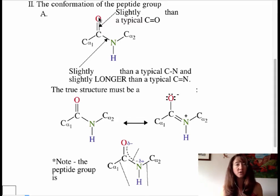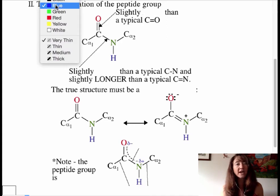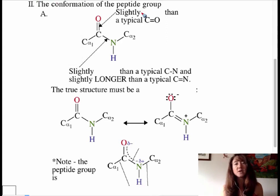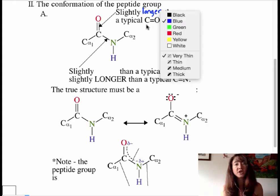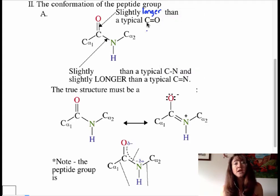One of the things that began perplexing scientists was that when they looked at this supposed C double bond O, they started to recognize that it was actually slightly longer than a typical C double bond O. This was a bit of a eureka moment when they realized that this was longer than what you would expect to see if this were a true and traditional C double bond O.